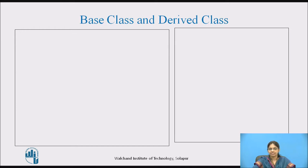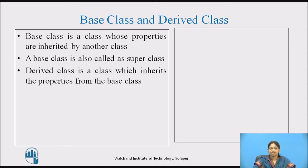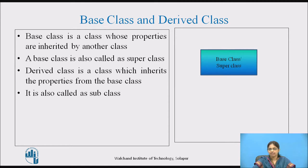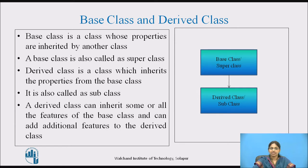A base class is a class whose properties are inherited by another class, also called a superclass. A derived class is a class which inherits properties from the base class, also called a subclass. A derived class can inherit some or all features of the base class and can add additional features of its own. The total members of the derived class combine inherited features and its own features.